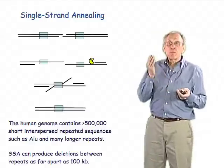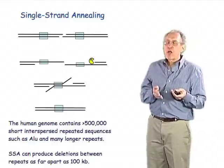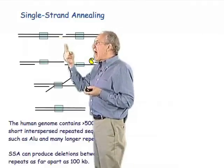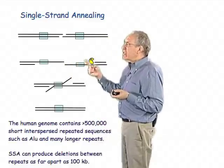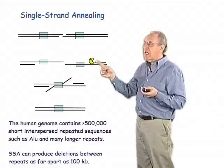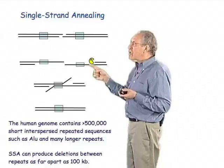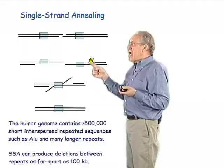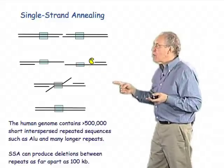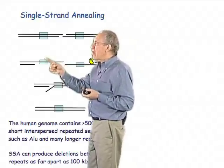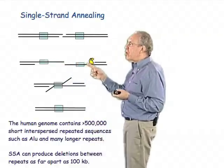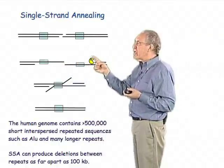In single-strand annealing, there's been a double-strand break, and that double-strand break is acted upon by those exonucleases — here represented by Pac-Man — chewing away the DNA until there are long regions of single-stranded DNA. And when enough single-stranded DNA has been exposed, there's a probability that there will be the exposure of sequences which are repeated on both sides of the double-strand break.